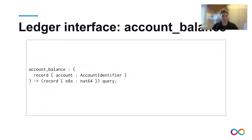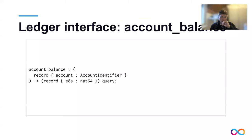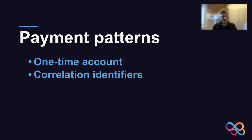The second method we provide right now is account-balance. It's pretty easy to understand — you call account-balance and specify the account identifier you're interested in, and the ledger gives you back the balance on this account. So let's see how we can use these two methods and maybe some future methods to do payments on the ledger.